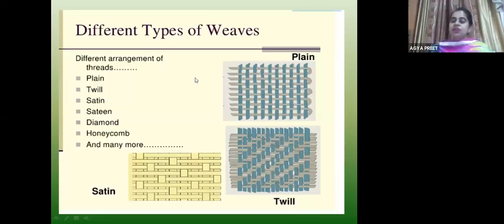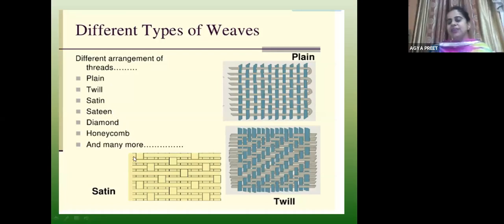We can do different types of weaves: plain, twill, satin, diamond, honeycomb and many others. Today I will be discussing the main three basic weaves — plain, twill and satin.